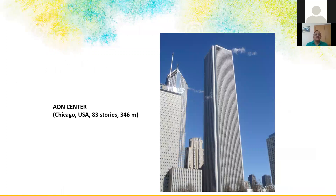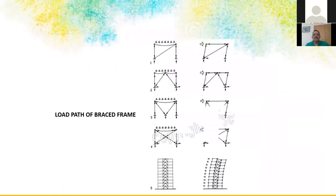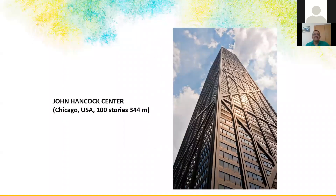A frame tube example is the Brunswick Center. Braced tubes stiffen widely-spaced columns using diagonal bracings where required by planning. The braced tube load path is like a truss. The John Hancock Center uses the brace tube concept — it is an office building requiring more windows, which forced increased column spacing, so bracings are used to reduce shear forces in the columns.